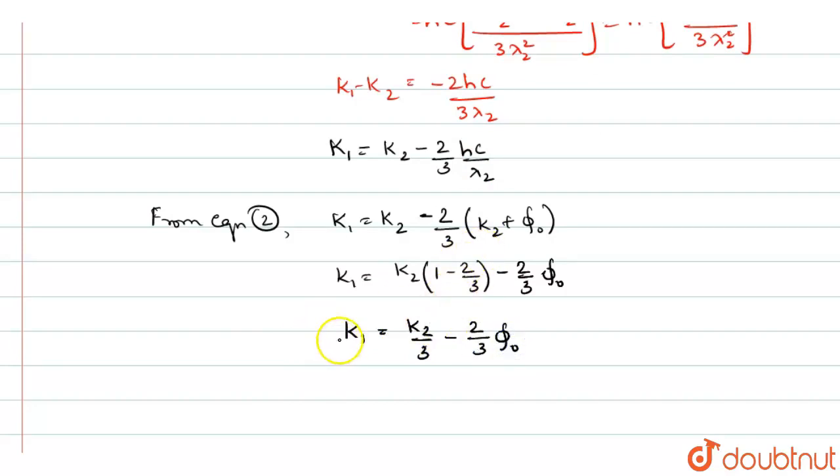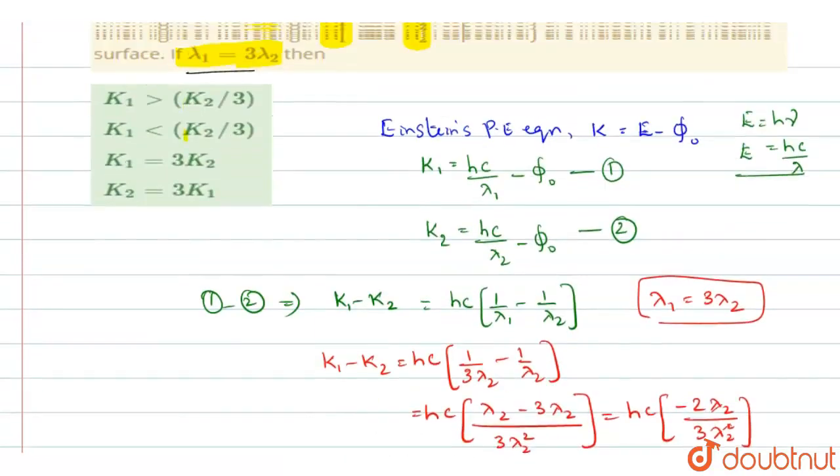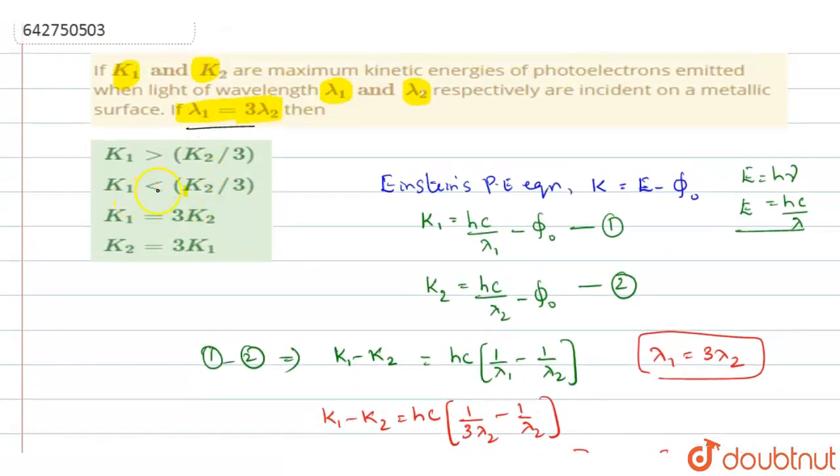So we can see this equation and you can say like, see K1 should be K2 by 3 minus 2 by 3, minus means what? The lesser value, right? So when you are writing the relation, you can write it as K1 will be less than K2 by 3. Because you have minus sign, minus means it will be obviously lesser than K2 by 3. So you can say K1 is less than K2 by 3 is the relation between K1 and K2. K1 is less than K2 by 3. Option B is the right answer.